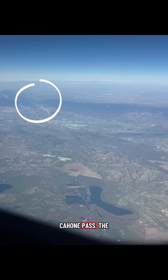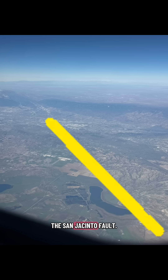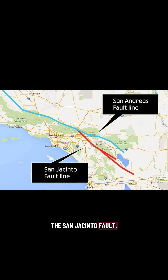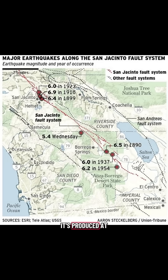Now let's look at it from the air. This is the Cajon Pass. The San Andreas Fault cuts across the mountains from the southern side of the San Bernardinos to the northern side of the San Gabriels. This is the northern end of the San Jacinto Fault. The San Jacinto Fault, which runs from the Cajon Pass to near the Mexican border, is a complex fault system made up of many parallel fault strands and it's one of the most active fault zones in Southern California. It's produced at least 11 earthquakes greater than magnitude 6 in the last 120 years.